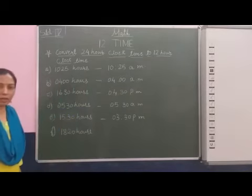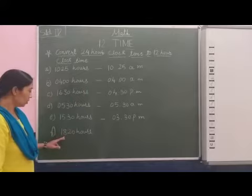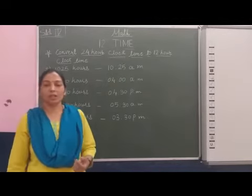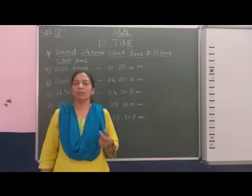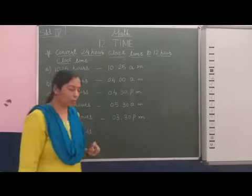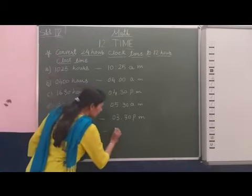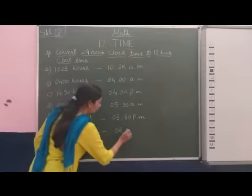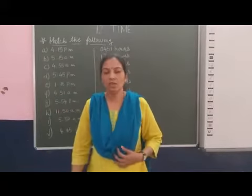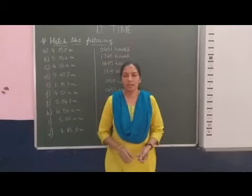18:20 hours, 18:20 hours means it's evening time. So 18 minus 12 equals 6 hours 20 minutes PM, post-meridian time.